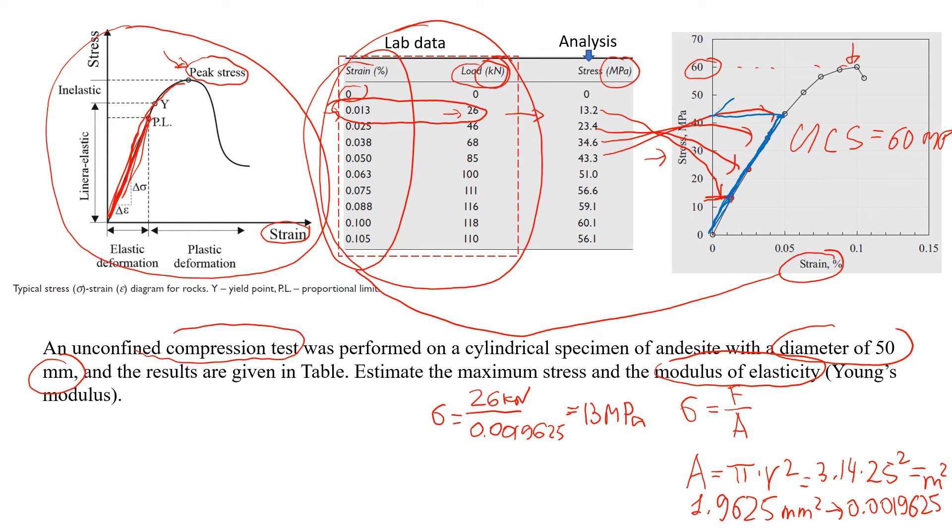In this case, stress will be about 43 MPa, and strain will be about 0.05%. Because we're gonna use strain, we just have to make it without the percentage, so we'll be 0.0005.